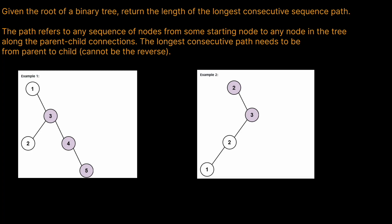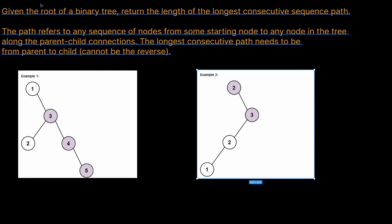Let's look at an example. Here we can see that 3, 4, 5 is the longest chain. We have 1 to 3, which doesn't work because these are not consecutive — there should be a 2 in between. Also, we can't have a chain from 3 to 2 because we need to be increasing; we can't be decreasing. So 3 to 2 is not a valid candidate.